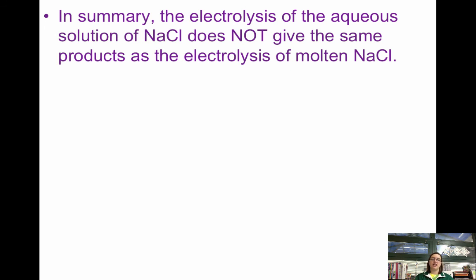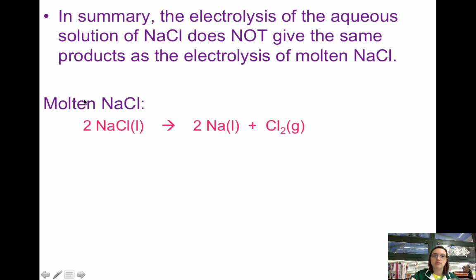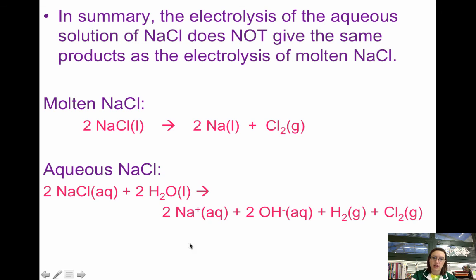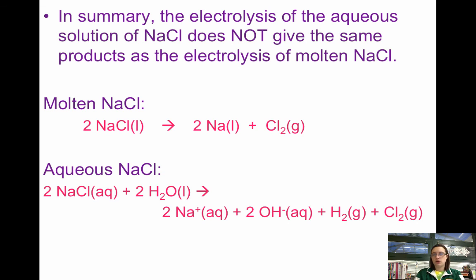In summary, the electrolysis of aqueous NaCl and molten NaCl are not the same. For molten NaCl, we simply decompose it into its atoms: sodium liquid and chlorine gas. For aqueous NaCl — NaCl plus H₂O — we form Na⁺, OH⁻, H₂, and Cl₂. The products are quite different. If you have any questions, please read section 20.9 in your book, which provides extra figures, pictures, and information on electrolysis. Write questions in your notes and bring them to class.